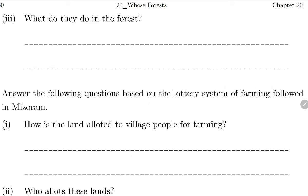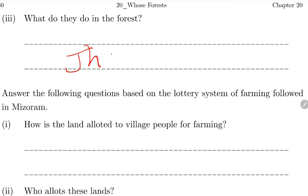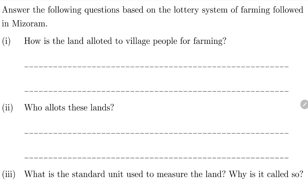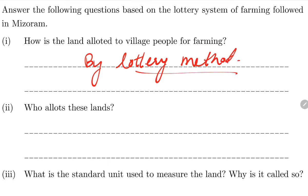Answer the following questions based on the lottery system in farming followed in Mizoram. In Mizoram, the land in the village does not belong to any one person - it belongs to the whole village. Every year it is distributed by lottery. Name slips are put in a bamboo basket, and whoever's name is drawn first gets to choose first. Land is allocated to village people for farming by the lottery method.